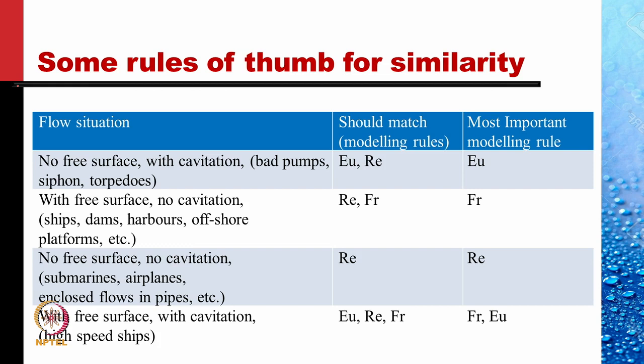The dependence on Froude number drops out because there is no free surface. But when we have a free surface but no cavitation — like ships, dams, harbors, offshore platforms, etc. — the Euler number is unimportant. We can take the pressure difference as one half rho V squared, so the Euler number drops out and only Reynolds number and Froude number are important. Again, the dependence on Reynolds number is rather low, so we need to match Froude number.